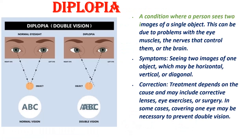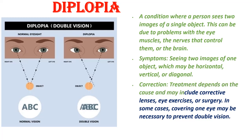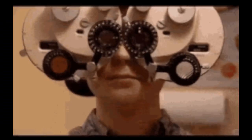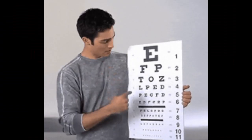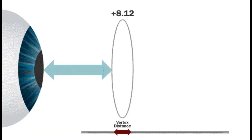Diplopia (double vision): A condition where a person sees two images of a single object, which can be due to problems with the eye muscles, the nerves that control them, or the brain. Symptoms include seeing two images of one object, which may be horizontal, vertical, or diagonal. Treatment depends on the cause and may include corrective lenses, eye exercises, or surgery. In some cases, covering one eye may be necessary to prevent double vision. These eye defects are typically diagnosed through a comprehensive eye examination, and most can be corrected or managed with appropriate treatment.